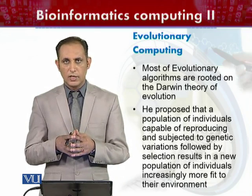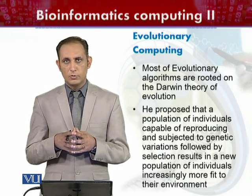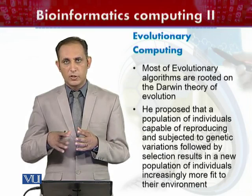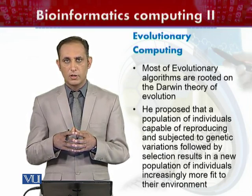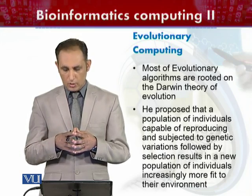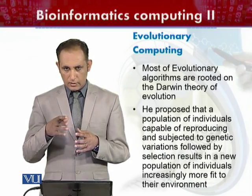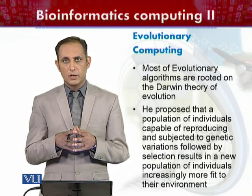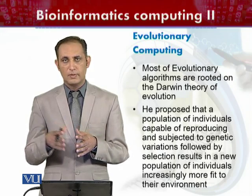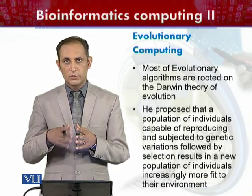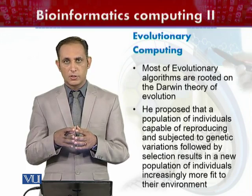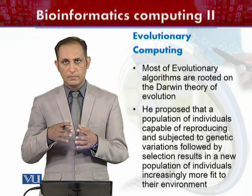Darwin's evolutionary theory میں Darwin نے propose کیا کہ اگر ہمارے پاس ایک population of individuals ہو جو reproduction کے قابل ہو، اور وہ population certain genetic changes کے subject ہو — جن میں variations اور mutation شامل ہیں — تو اس پر genetic changes followed by a selection process apply ہوتا ہے۔